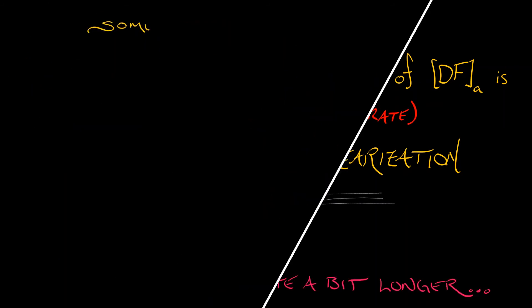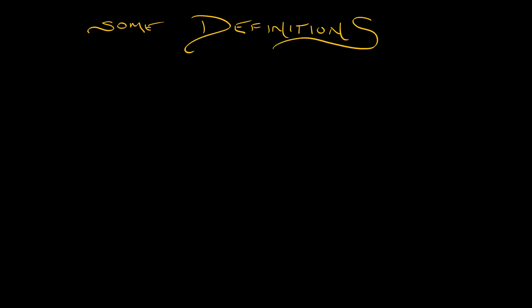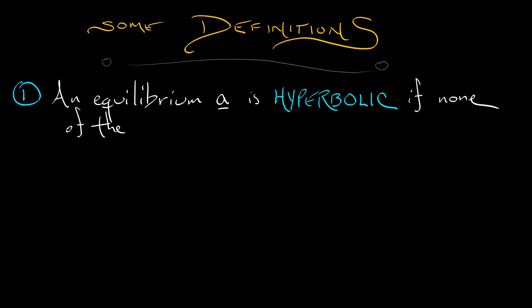Let's start with some definitions. First of all, we say that an equilibrium in a dynamical system is hyperbolic if none of the eigenvalues of the linearization at that equilibrium is neutral. So that means that all the eigenvalues have to be either stable or unstable or some mix of stable and unstable. It doesn't matter.